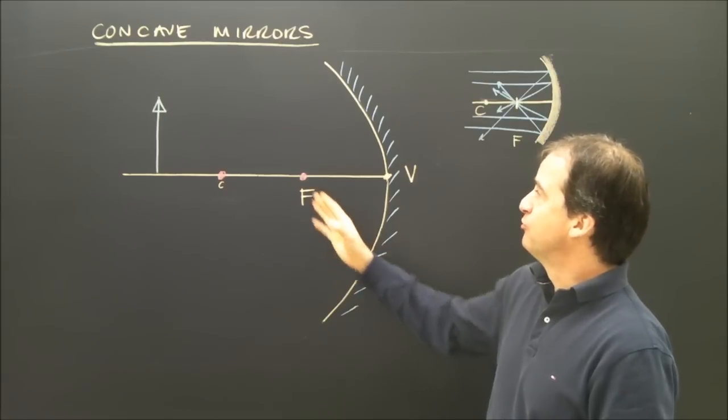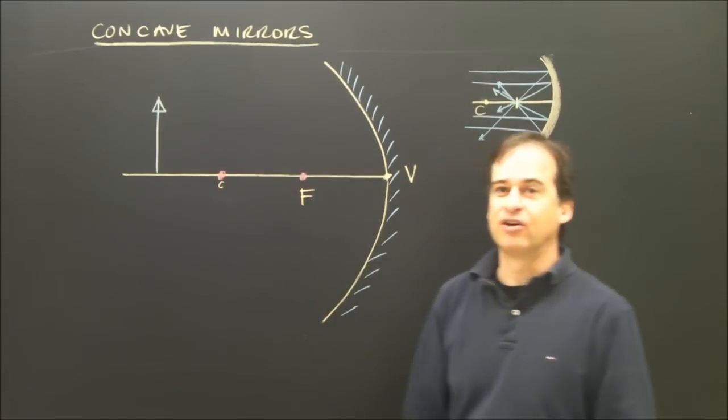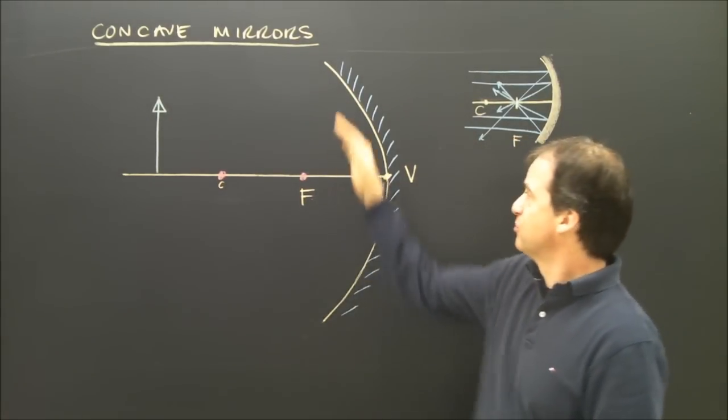Let's use a ray diagram to find the image for something in a concave mirror. So, here's my mirror.